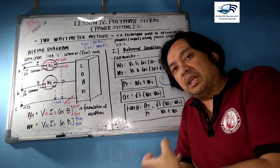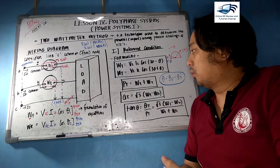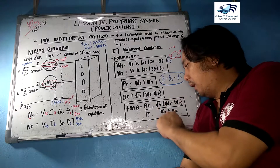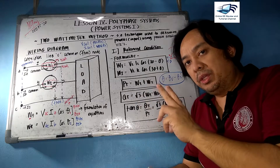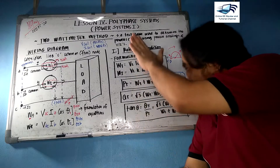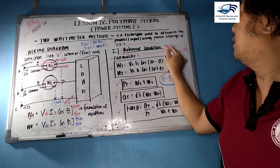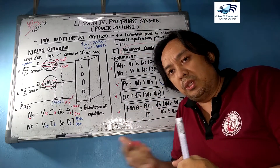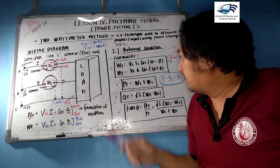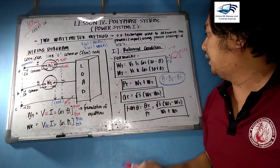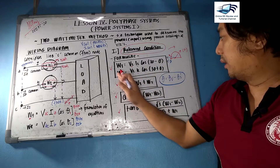We can derive equations from there, but for this discussion we will limit ourselves to the predetermined formulas. For the balanced condition only, wattmeter 1 equals VL·IL·cosine(30° − θ) and wattmeter 2 equals VL·IL·cosine(30° + θ), where VL and IL are line voltage and line current. Note these formulas cannot be used for unbalanced conditions.